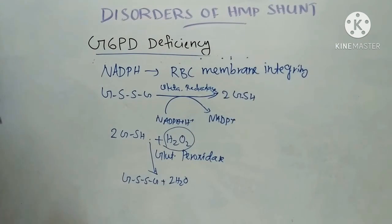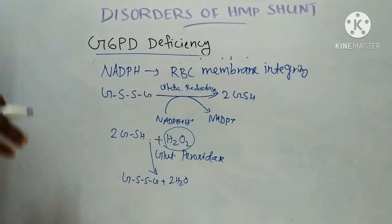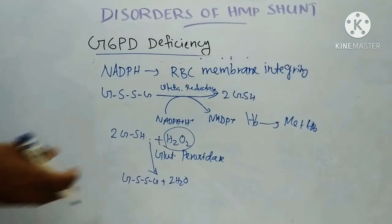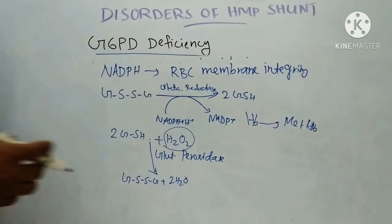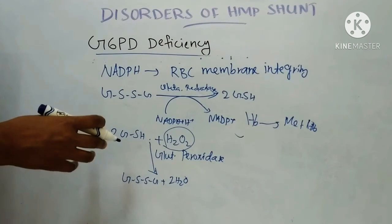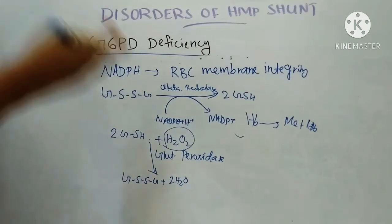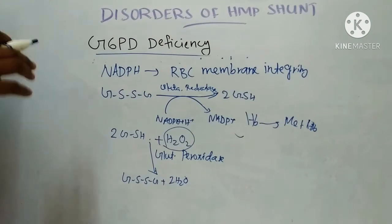This reaction is important because accumulation of hydrogen peroxide may decrease the lifespan of RBC by increasing the rate of oxidation of hemoglobin to methemoglobin. So in G6PD deficiency, there will be NADPH deficiency, there will be no maintenance of RBC membrane integrity, and there will be hemolysis leading to hemolytic anemia.